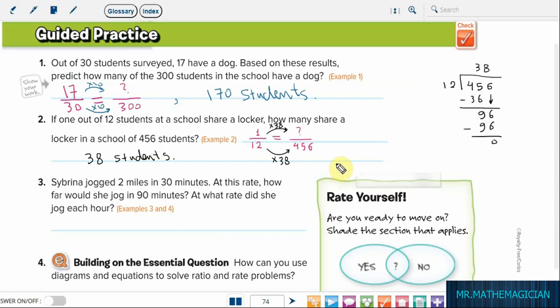She's jogging 2 miles in 30 minutes and we need to know how many miles in 90 minutes. So from 30 to 90 we multiplied by 3, so we multiply here by 3 and this will give 6. So the answer of the first part is 6 miles.